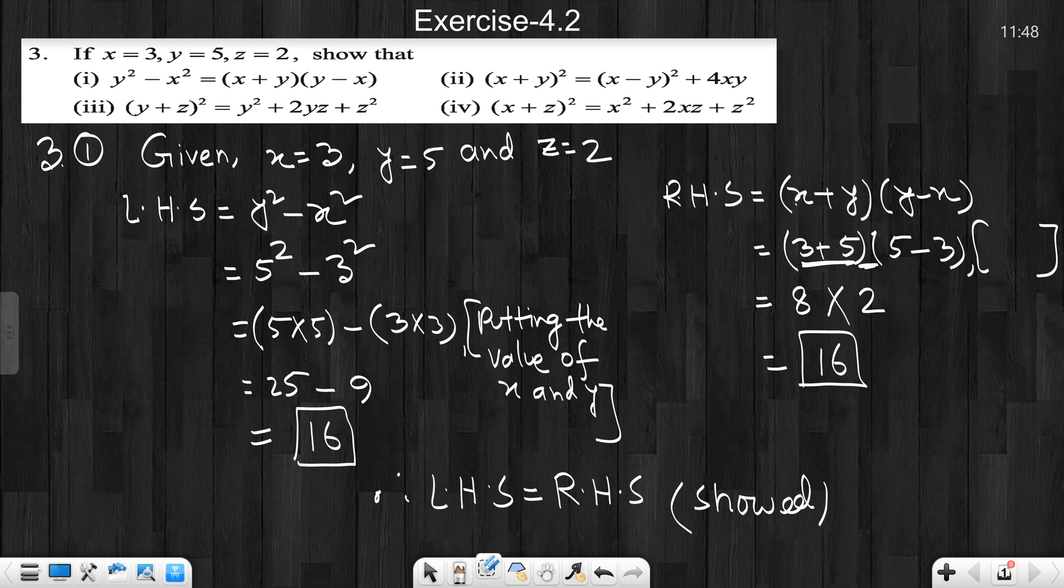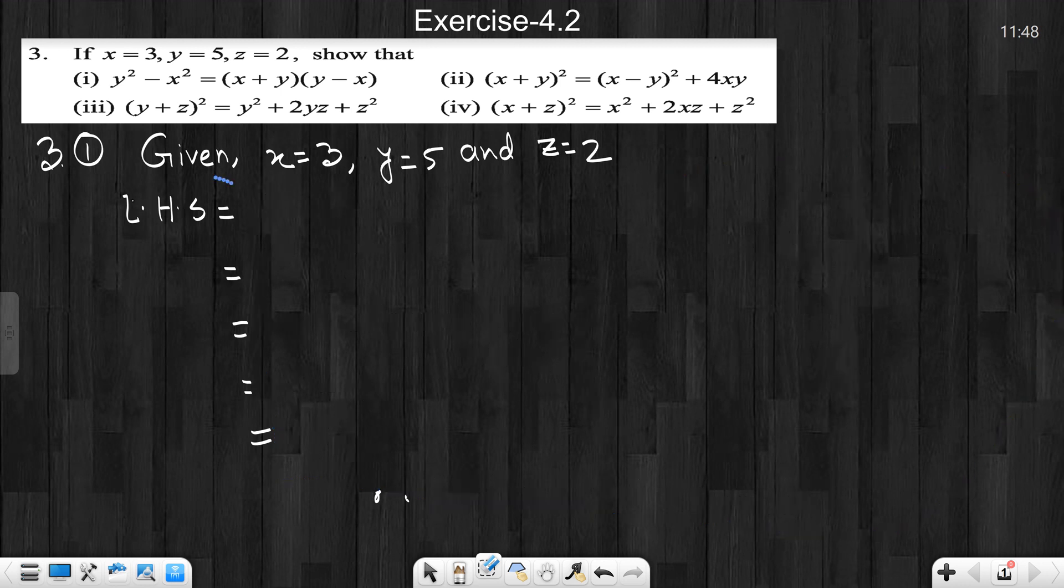So, this is the number one math solution. Now the two number math. Two number math, you can write the value of x, y and z. Let's start with the left hand side. Left hand side equals x plus y whole square.